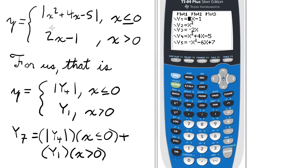For piecewise functions, you'll see the y equals split into two or more pieces like this. In this case, y equals the absolute value of x squared plus 4x minus 5 for x is less than or equal to 0, and y equals 2x minus 1 for x is greater than 0.